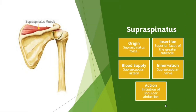The first muscle is supraspinatus. The supraspinatus originates in the supraspinatus fossa. The muscle name gives you a clue about where it's located — supra means above, and spinatus means the spine of the scapula. The supraspinatus passes underneath the acromion to attach to the greater tuberosity. The blood supply is the suprascapular artery, and the muscle is innervated by the suprascapular nerve. In isolation, this muscle creates abduction of the humerus.